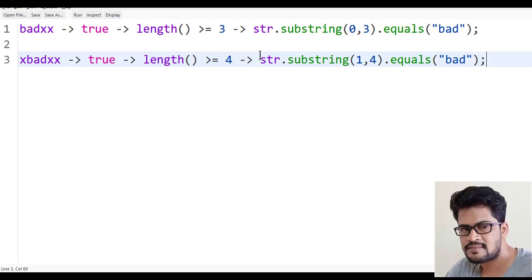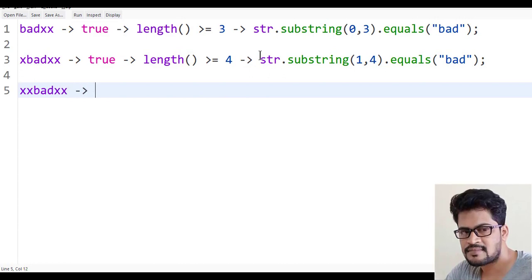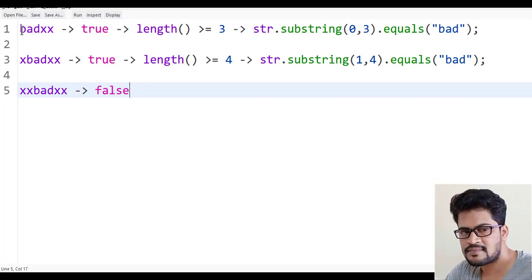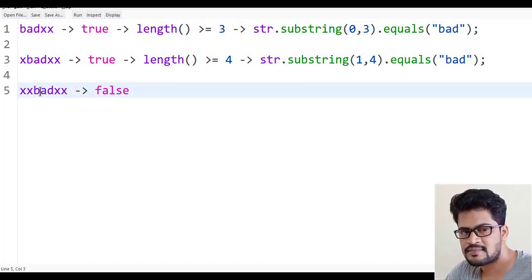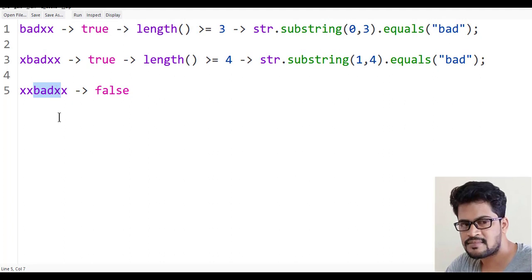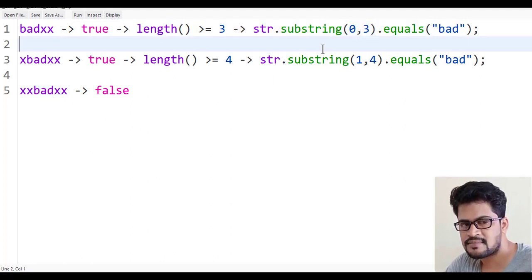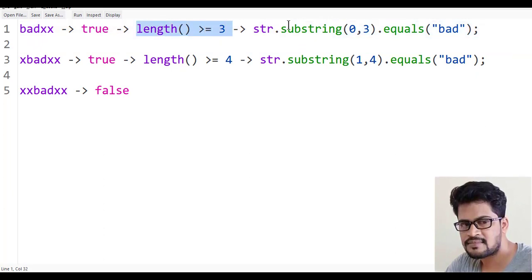Next, suppose xxbad something is there, then this is false because we want to check only starting index 0 or 1, not from the second index onwards. That's the question.